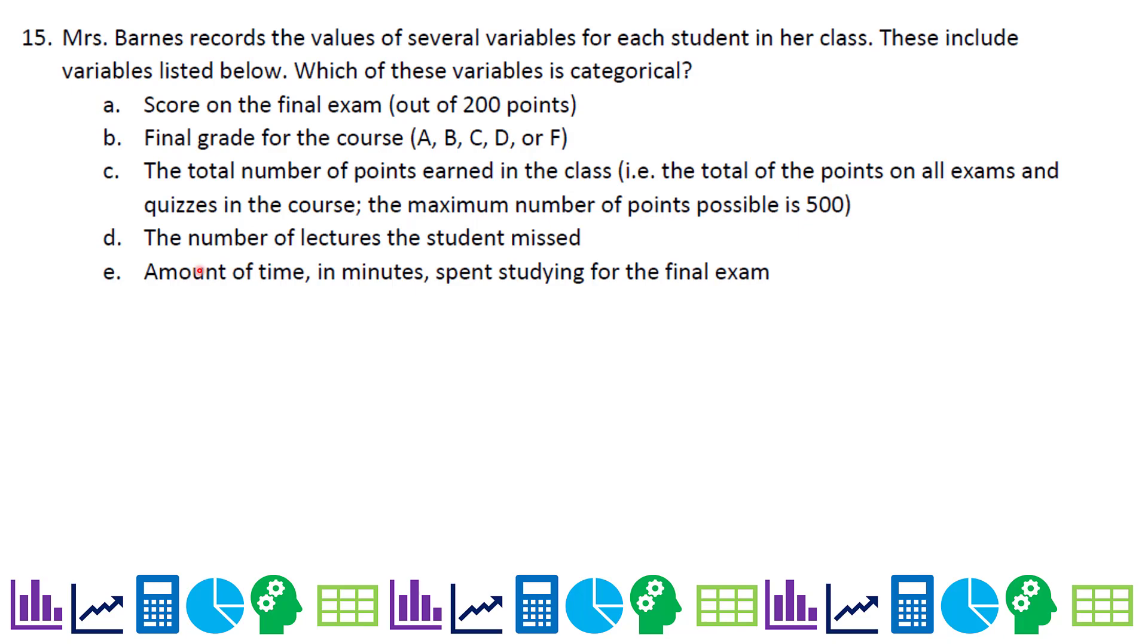Number 15. Mrs. Barnes records the values of several variables for each student in her class. These include variables listed below. Which of these variables is categorical? Score on the final exam out of 200 points, that's quantitative. Final grade for the course. Well, I'm pretty sure that's categorical, because A, B, C, D. It's not like you're giving an actual number. You just gave the letter category. Total number of points earned in the class, quantitative. Number of lectures student missed, quantitative. Amount of time, quantitative. So our answer is B, the letter grade for the course.